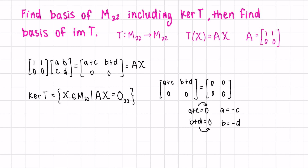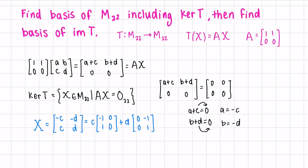Now let's rewrite this matrix. Instead of writing x as A, B, C, D, if x is part of the kernel, it's going to look like this for some C and D that are real numbers. Because C and D are totally separate, we can separate them into the sum of two matrices, and the linear combination of two matrices is just a span. So we could say the kernel of the transformation is the span of these two matrices. Are these matrices independent? Yes, because there are only two and they're not multiples of one another, so they form a basis of the kernel of T.